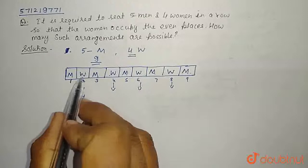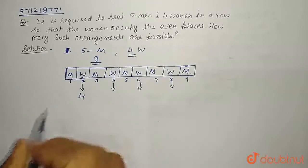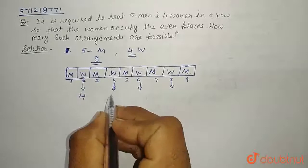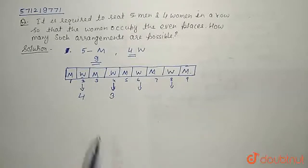Now 1 woman is already seated here, so we have left with 3 women. So the 4th position can be filled with 3 remaining women.